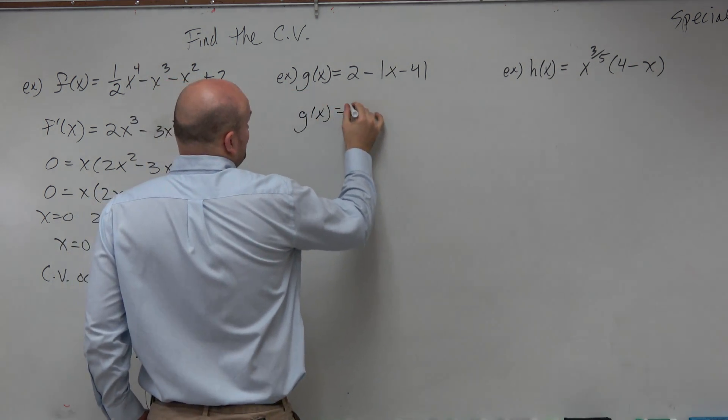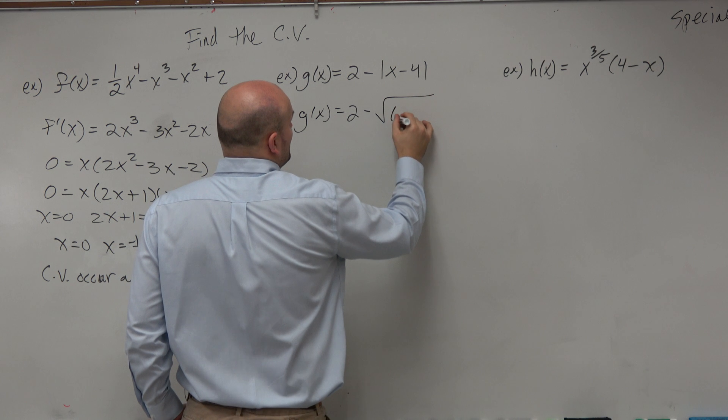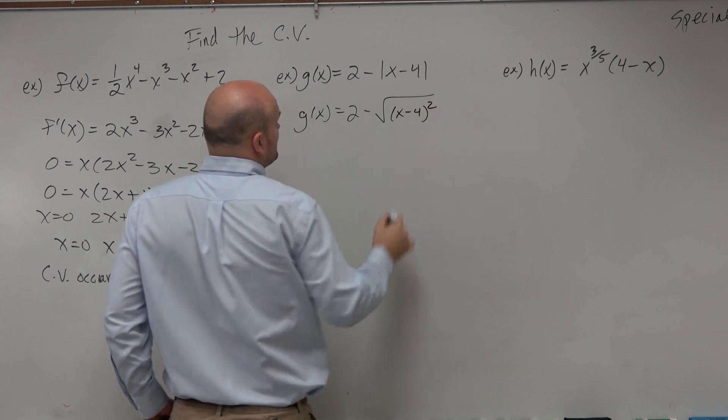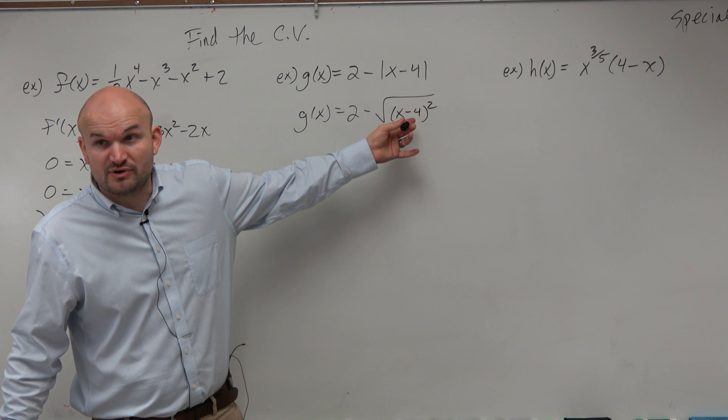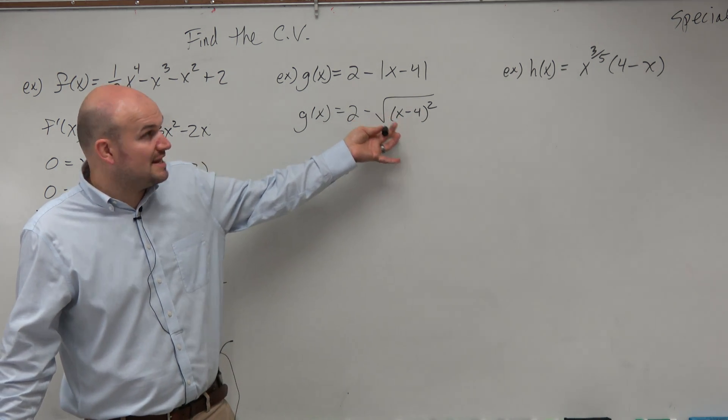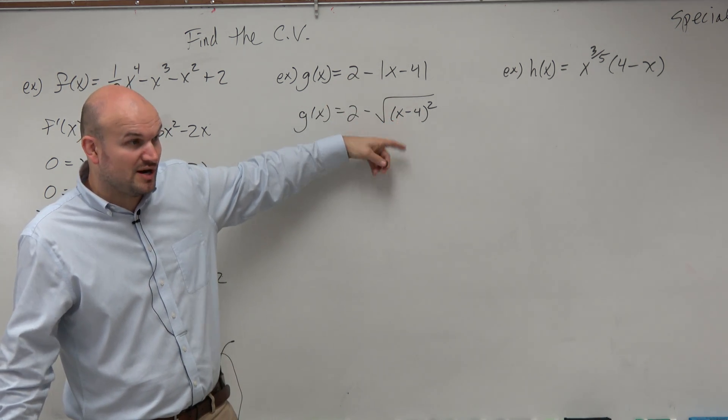as g(x) = 2 - √(x-4)², which is the absolute value, which is the same thing as the absolute value of the square root of something squared?